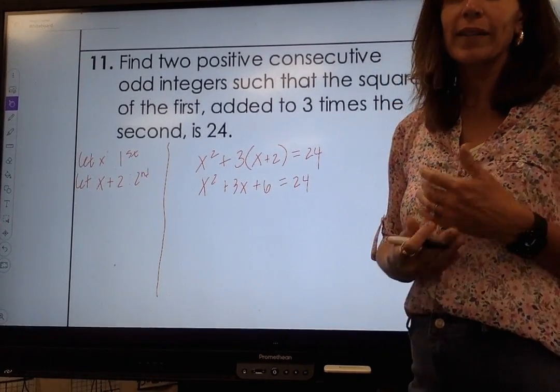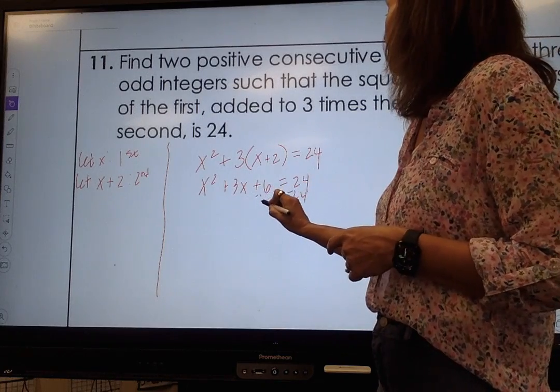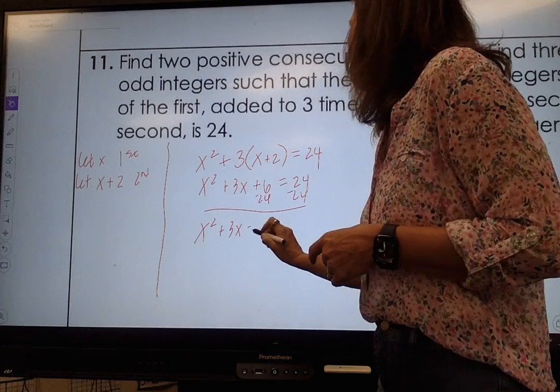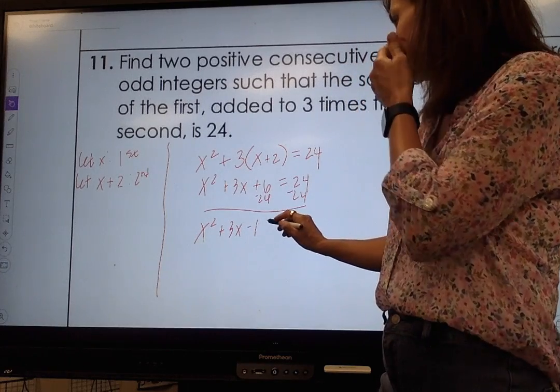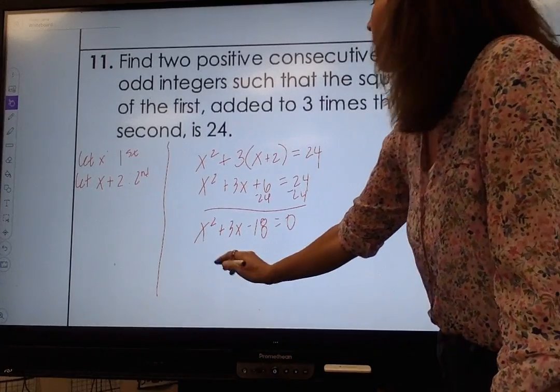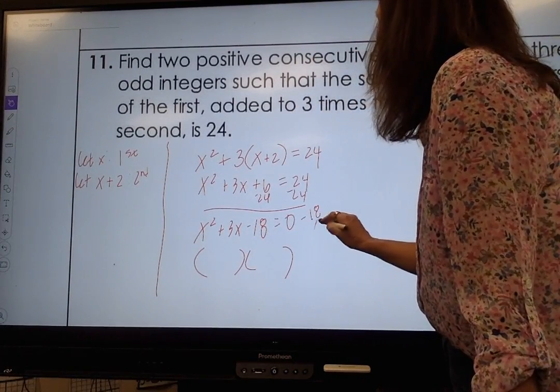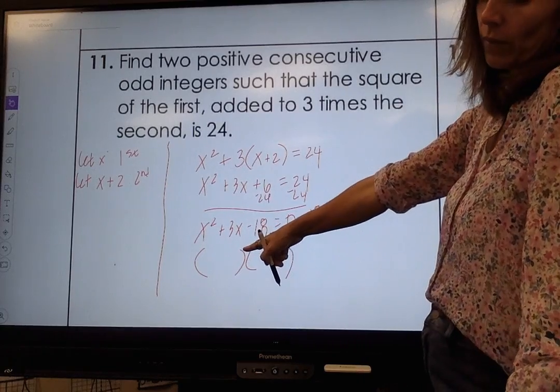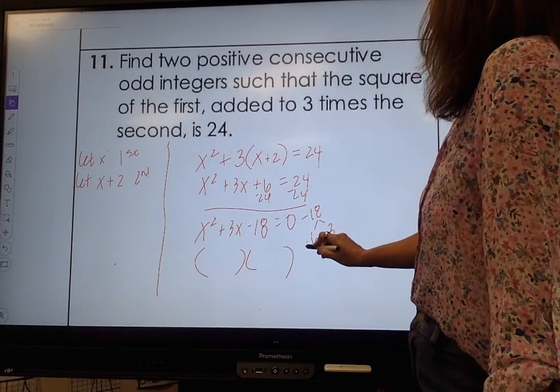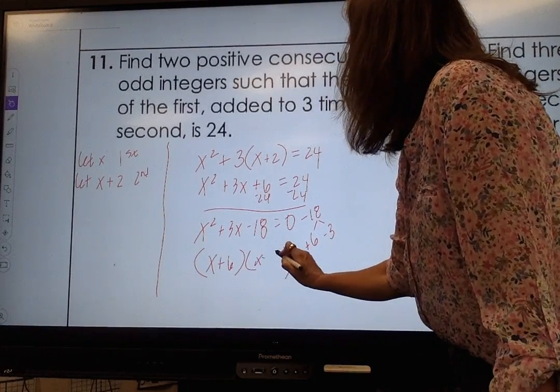Now I have a quadratic that I'm going to set equal to 0, so I'm going to subtract 24 on both sides. I get x squared plus 3x minus 18 equals 0. And now I am going to factor. So the two numbers that multiply together to give me negative 18 and combine together to give me 3 are going to be positive 6 and negative 3. So x plus 6 and x minus 3.